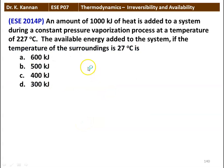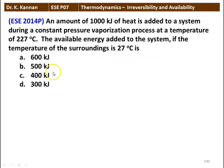The next question: an amount of 1000 kilojoules of heat is added to a system during a constant pressure vaporization process at a temperature of 227 degrees Celsius. The available energy added to the system, if the surrounding temperature is 27 degrees Celsius, is — options: 600, 500, 400, and 300 kilojoules. The answer is 400 kilojoules.